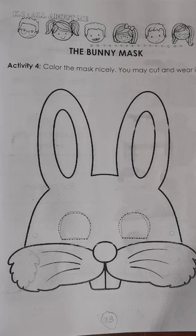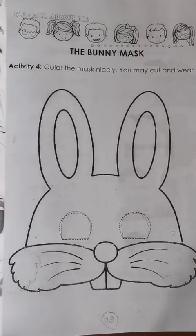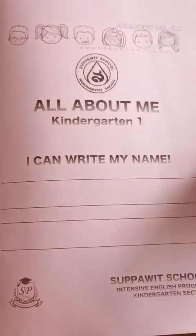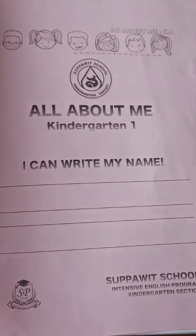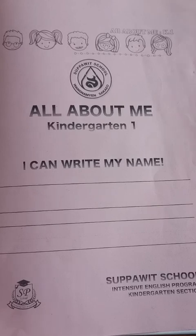Again, you answer page 45 and page 13 of your book. And this is your book, students — All About Me for Kindergarten One. So that is it, students. See you again next time. Goodbye.